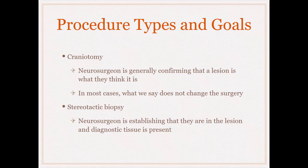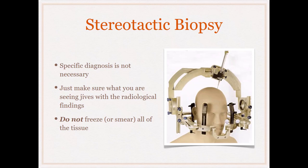If you're not sure, you can just say malignant epithelial neoplasm or malignant glioma. For stereotactic biopsies, they're making sure they're in the lesion and diagnostic tissue is present. You don't have to have a specific diagnosis — you just need to make sure what you think it is correlates with radiology. A specific diagnosis is not necessary; rather, you want to communicate to the neurosurgeon that what you see correlates with what the radiologist thinks the tumor is.